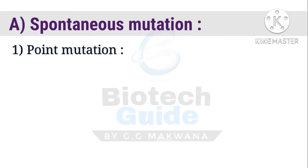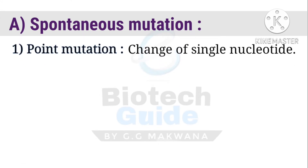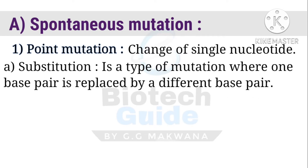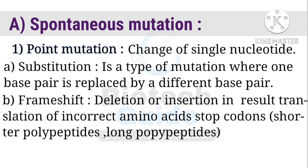Point mutation is defined as a change in a single nucleotide. It is classified into two types: substitution and frameshift. In substitution, one base pair is replaced by a different base pair. In frameshift mutation, insertion or deletion of bases results in translation of incorrect amino acids, producing stop codons which halt protein synthesis and form shorter or longer polypeptide chains.